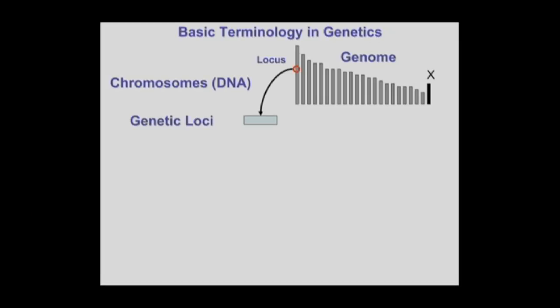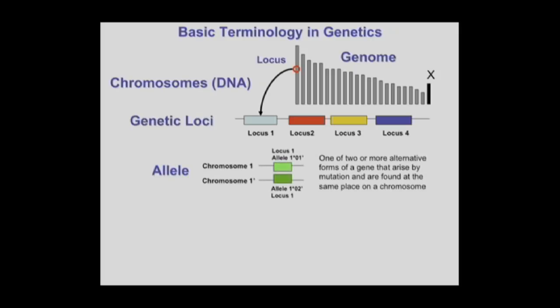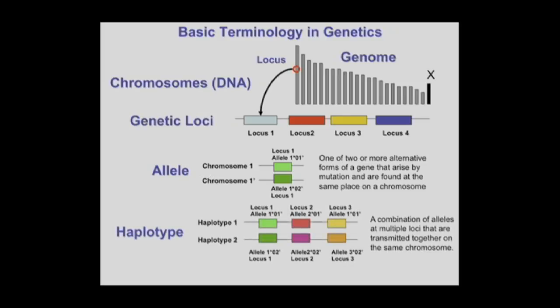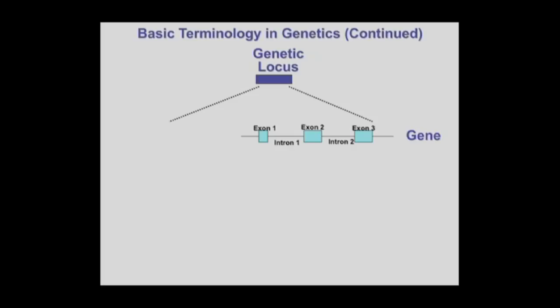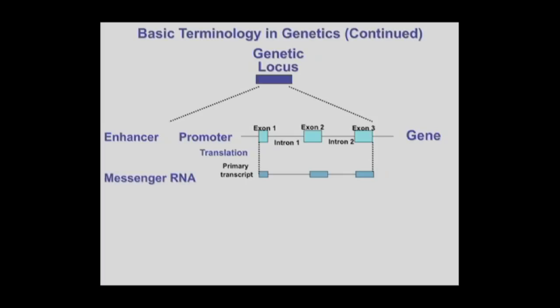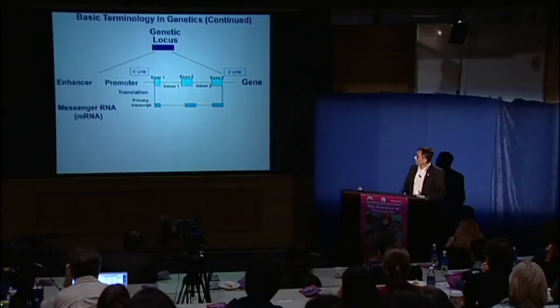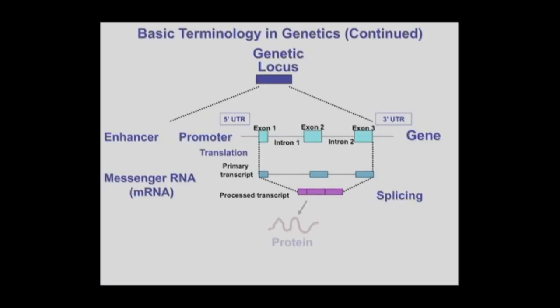Some basic terminology: a locus on a chromosome in a genome — the genome being all of the sequence in your genome. You can have alleles of the same gene, which are alternate forms found at the same place on a chromosome, and haplotypes, which are combinations of alleles at multiple loci transmitted together. A gene is broken into exons for coding amino acids, with enhancers and promoters affecting it. DNA is translated into RNA in a primary transcript, which undergoes splicing to give a processed transcript and protein. A major new development is that many RNAs are non-coding and do very important biological things.